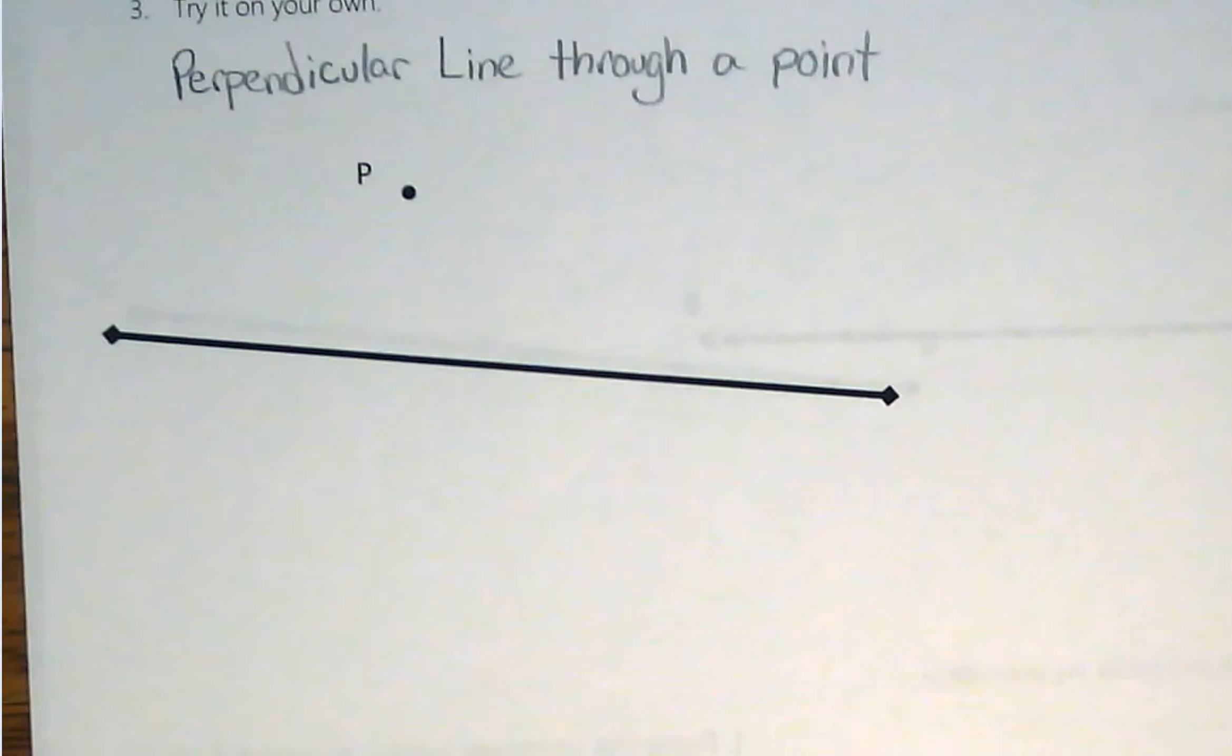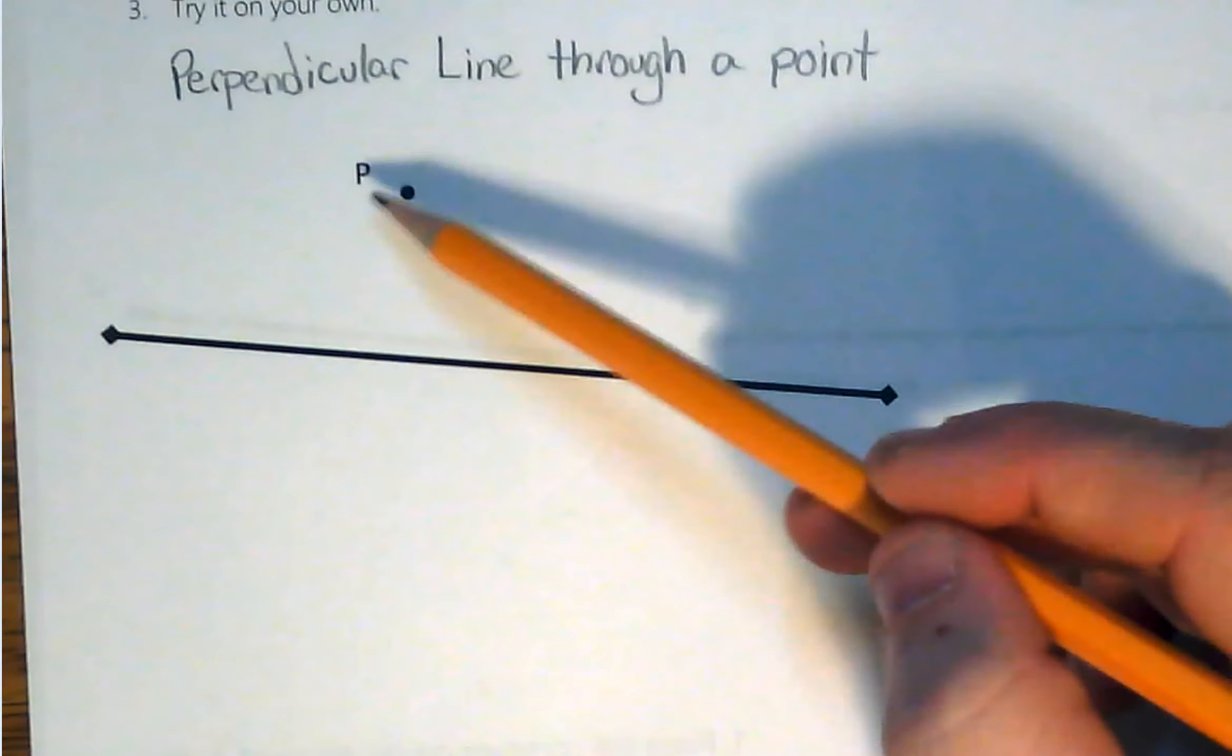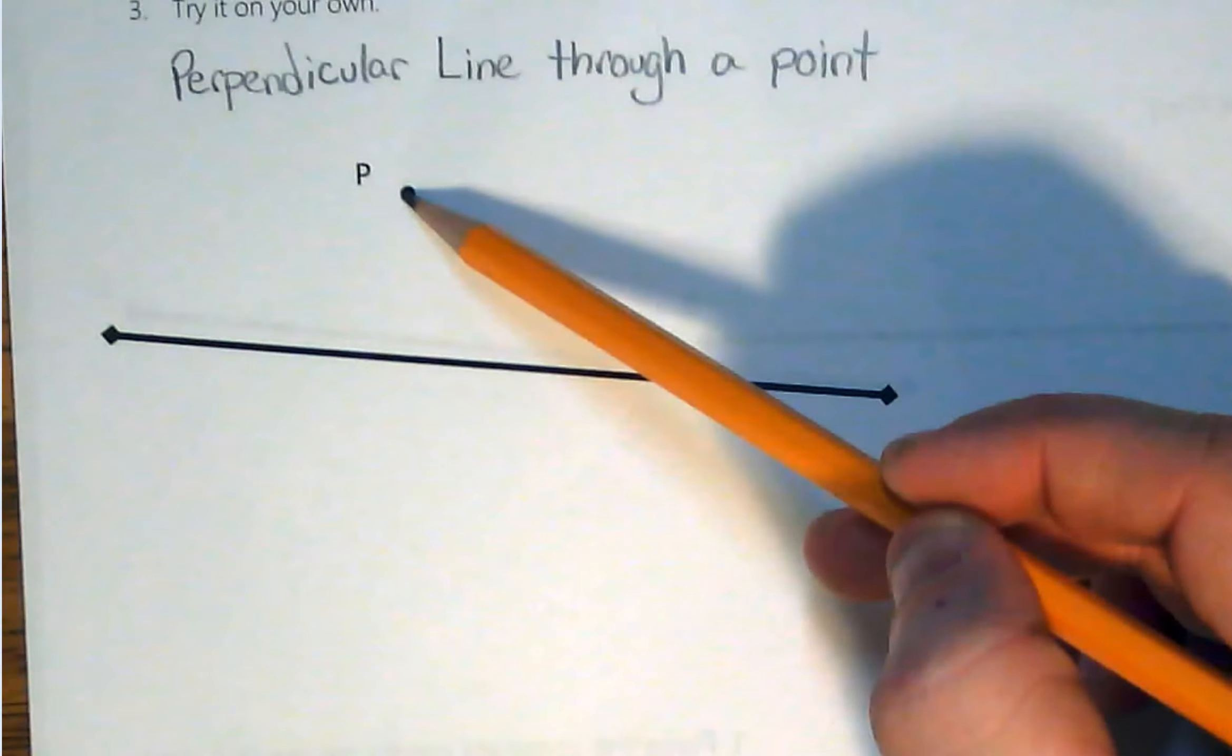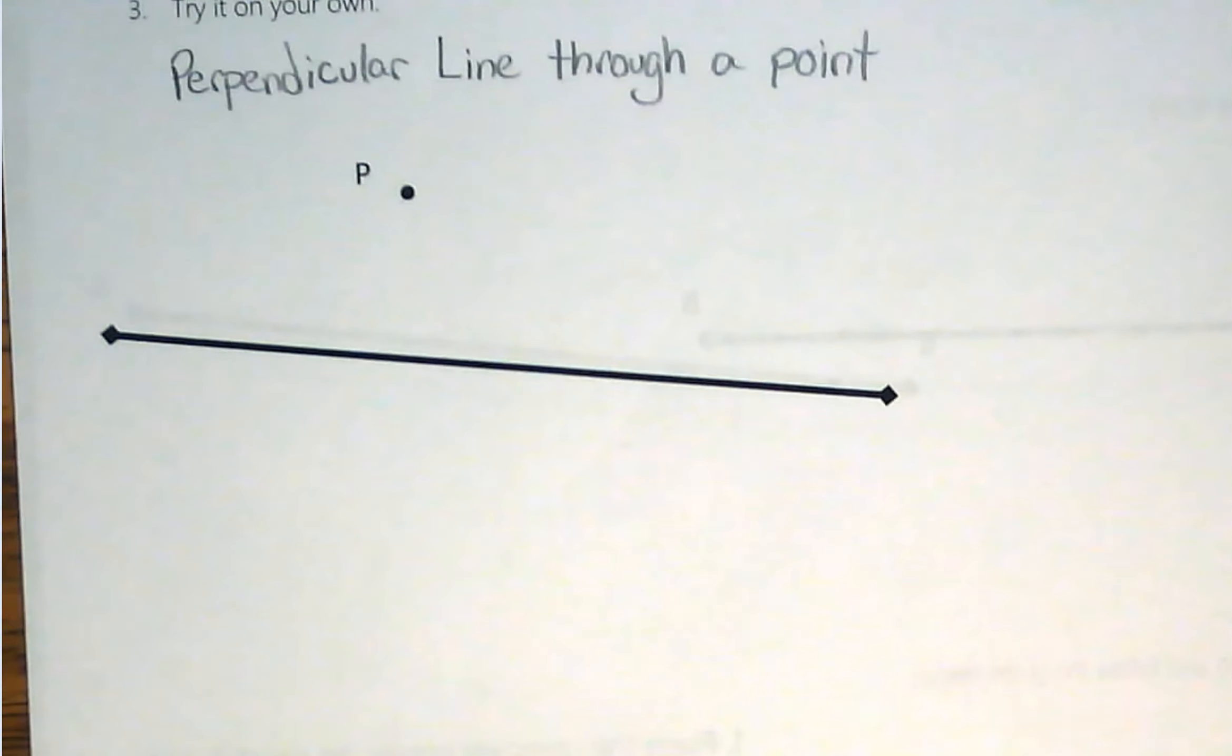Okay, so in this video, we're going to look at how we can construct a perpendicular line through a point. So we're going to draw a line through this point that is perpendicular to this given line. Let's take a look at how we would do that.